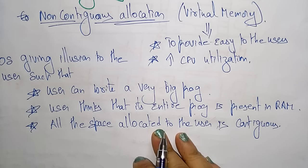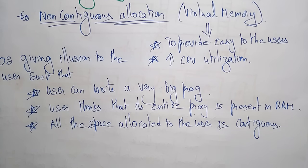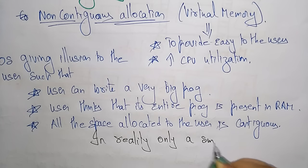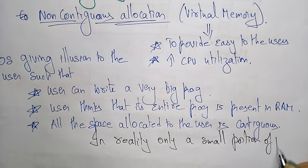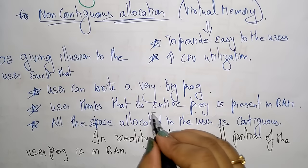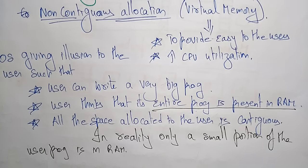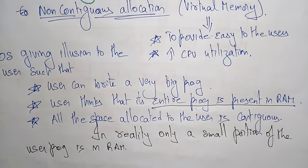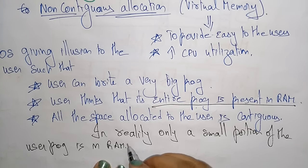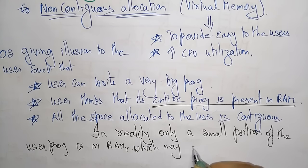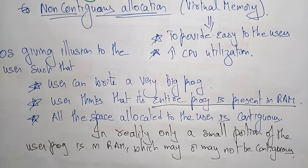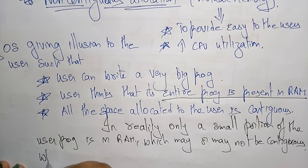In reality, only a small portion of the user program is in RAM. We are adding some virtual memory but in reality, only the small portion we want to execute is in real memory. That small portion may or may not be contiguous, while the remaining program is present in secondary memory.